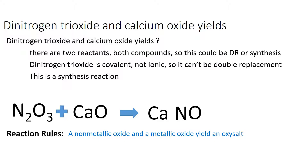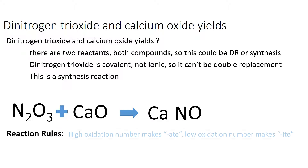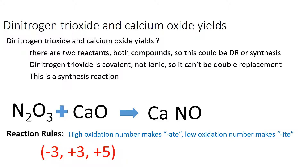We need to decide whether this is going to be nitrite or nitrate, so we go to our reaction rules again. We find that the high oxidation number will make nitrate and the low oxidation number will make nitrite. We're looking for the positive oxidation number for the nitrogen in the non-metallic oxide.